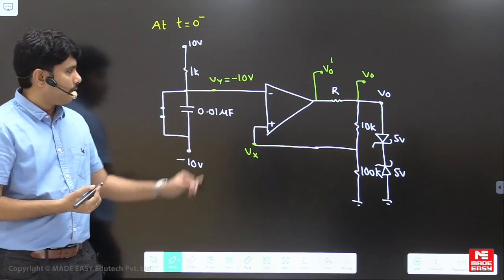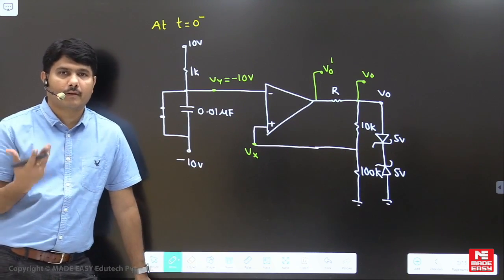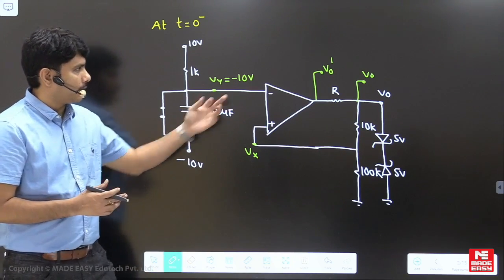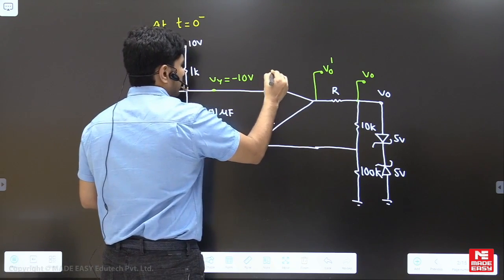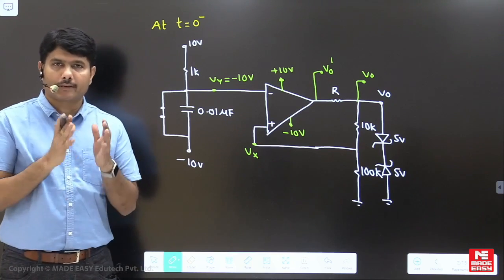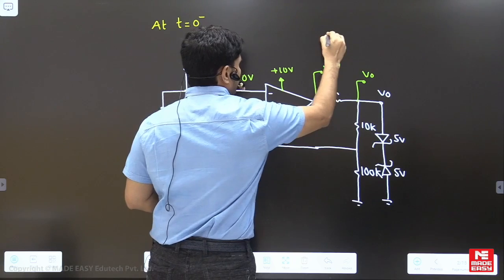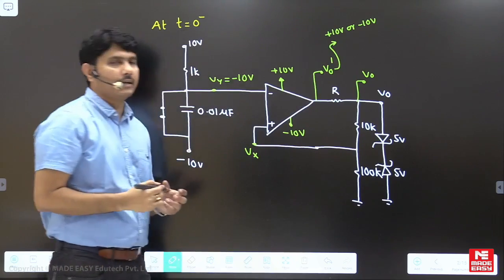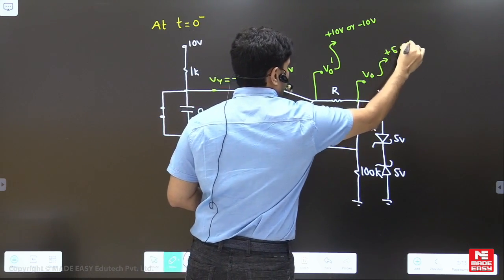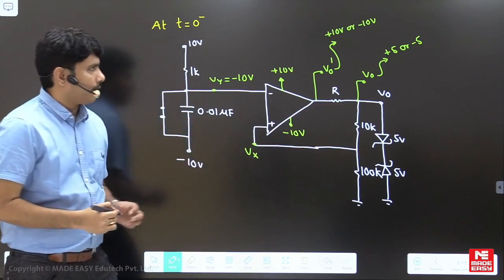Since this is a positive feedback op-amp acting as a comparator, we need V_x to compare against V_y. For a positive feedback op-amp, the output V₀' can only be +10V or −10V (saturation). Correspondingly, the zener diode output V₀ can only be +5V or −5V. Based on these two samples, we can find the V_x reference value.